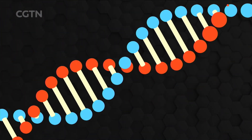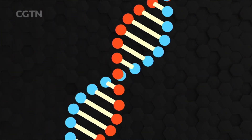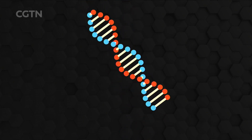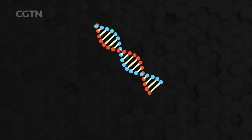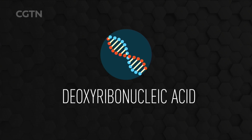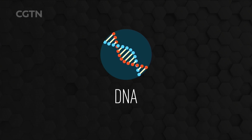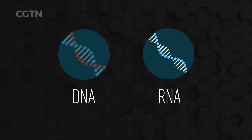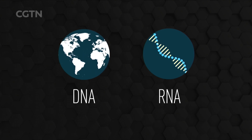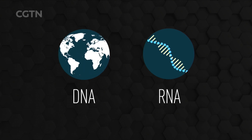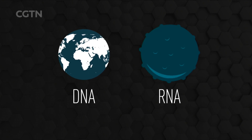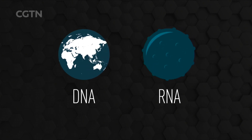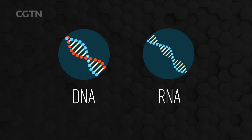Nucleic acids are large molecular structures known as biopolymers that form the essential components of life. They are split into two types: deoxyribonucleic acid and ribonucleic acid. Every living thing on our planet is DNA-based, with the exception of viruses, which can be RNA-based. And some argue that viruses aren't living at all.